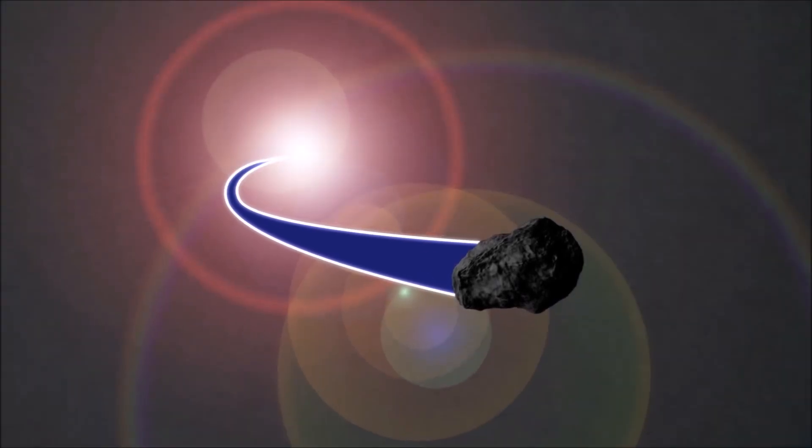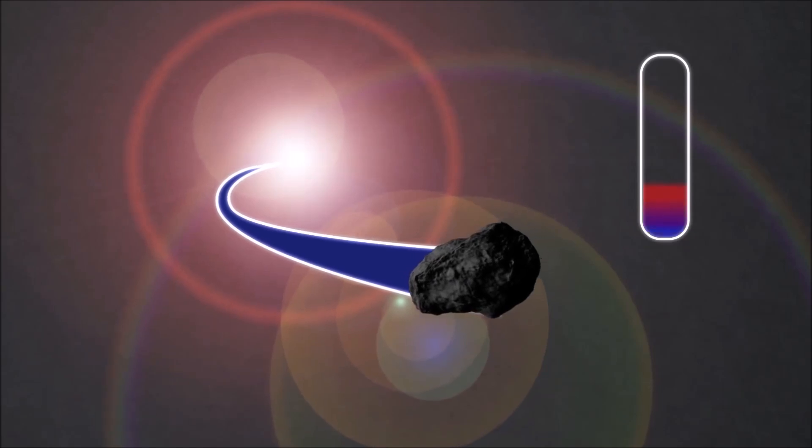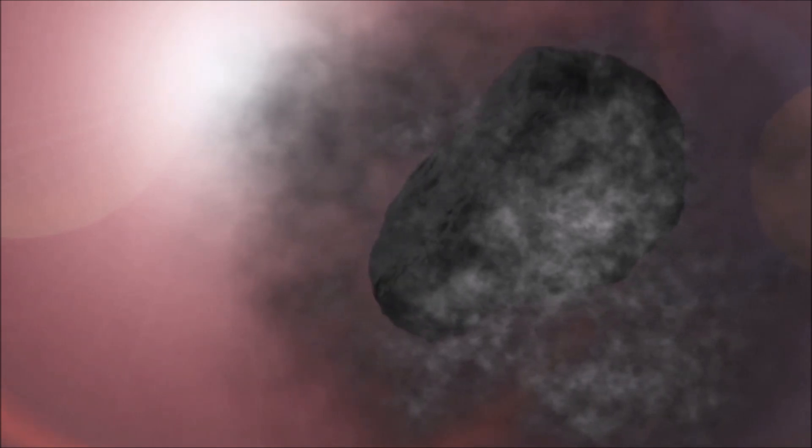While out in deep space, they are unremarkable lumps of ice and rock, but as they enter the inner solar system and come closer to the sun, they begin to heat up. The comet's ice begins to sublimate, or turn directly into gas. This gas creates a cloud around the comet making it seem fuzzy.